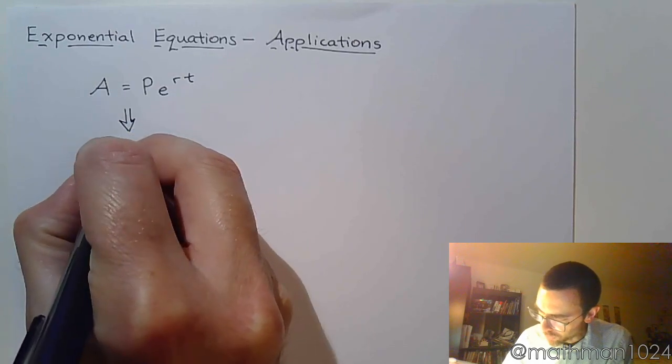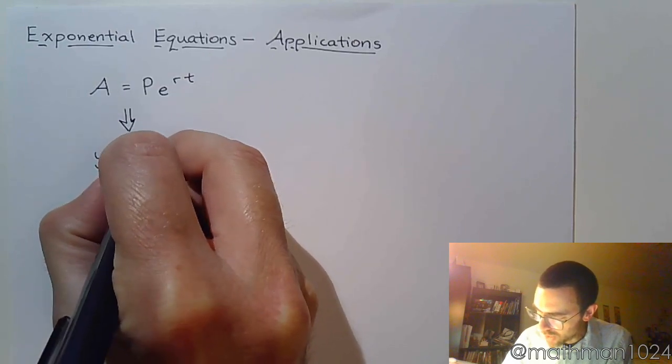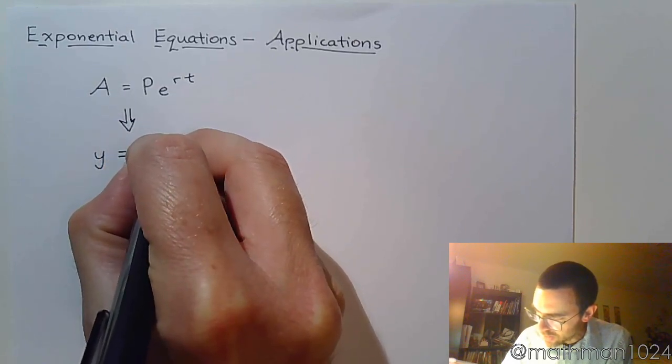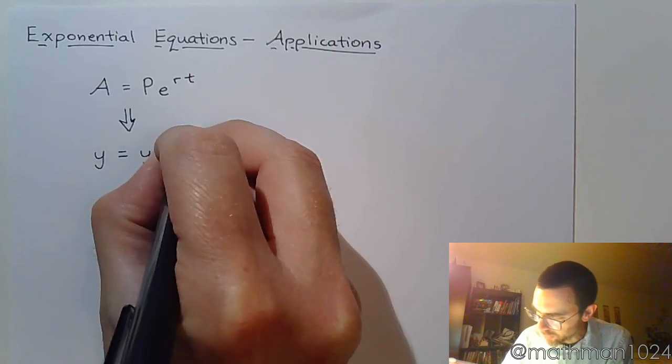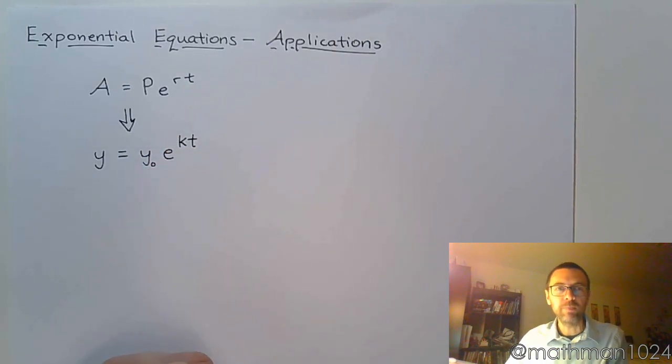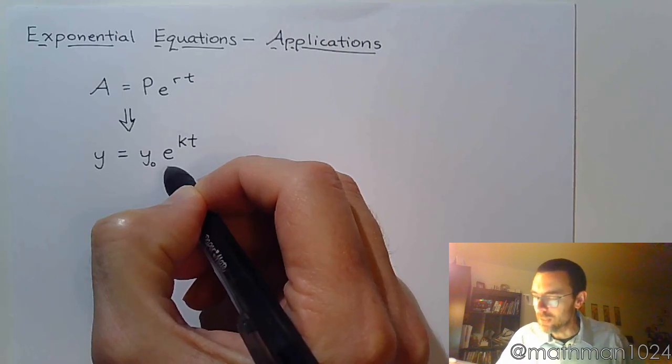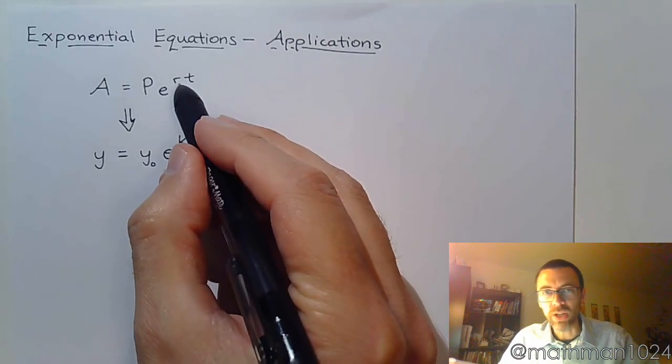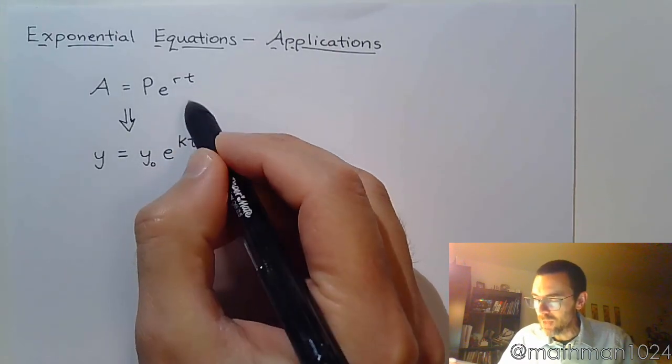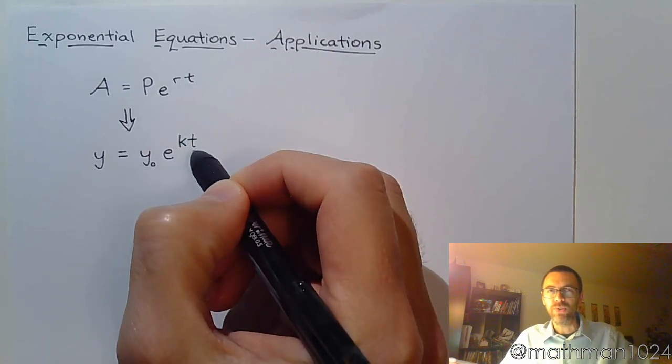In the past, when we were dealing with investing money with continuous compounding, we would use this formula: A equals P times e raised to the rt. Now we're going to transition into this other equation, y equals y naught e to the kt. It's pretty much the same thing, but it's useful because it can be used in more than just investing problems.